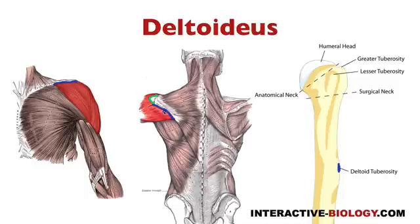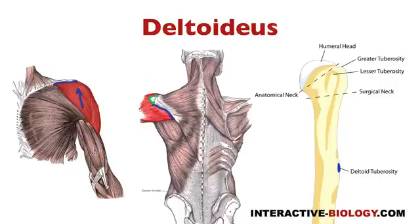Now, depending on which aspect of this muscle is contracting, we're going to get different actions. For example, just looking at where it originates and where it inserts — what happens if the anterior portion is contracting? Well, that's going to cause elevation of the humerus, so you're basically raising the arm forward.